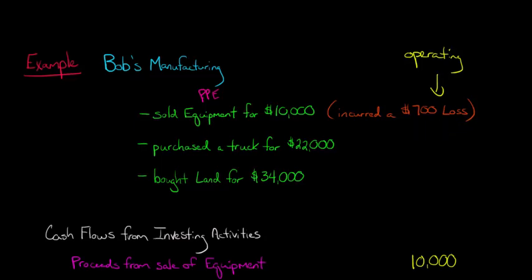we just have the $10,000 proceeds from the sale of equipment. We do factor in the loss by backing it out and adding it back in the operating section, but we're not dealing with that right now. We've got the $10,000 proceeds from the sale of equipment as a positive cash flow. Now, we purchased a truck for $22,000.